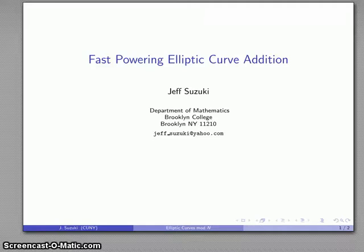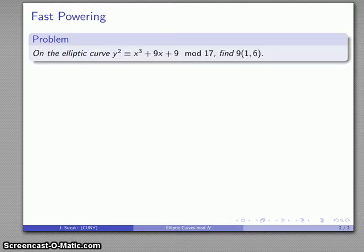Something else I'll want to be able to do is to take a look at very high multiples of a point on an elliptic curve, and what we can do is we can do the same thing we did when looking at high powers of a number, which is use the fast powering algorithm. And that's essentially the same in both cases.